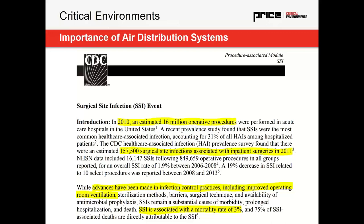Advances have been made in infection control practices — these include improved operating room ventilation, sterilization methods, barriers, surgical techniques, etc. The CDC has improved operating room ventilation listed as their number one thing to help control these infections. So we want to focus and make sure we're doing the best we can to prevent this spread.